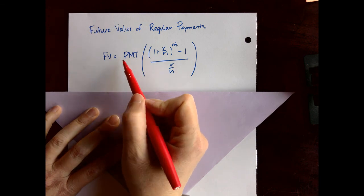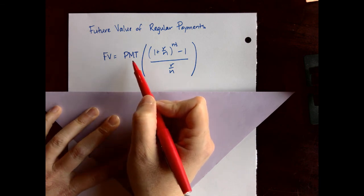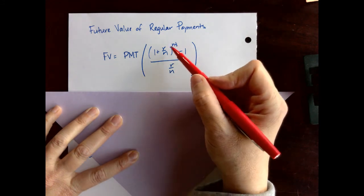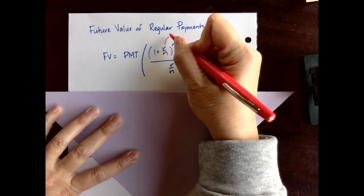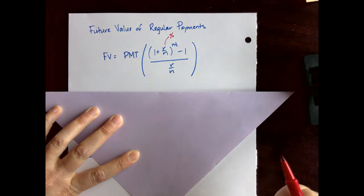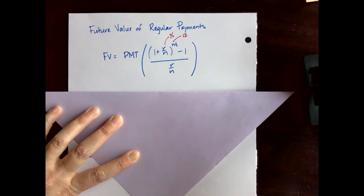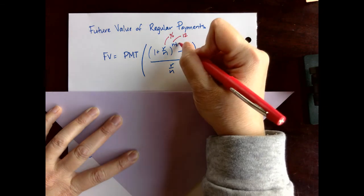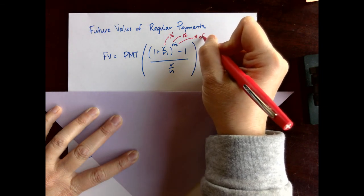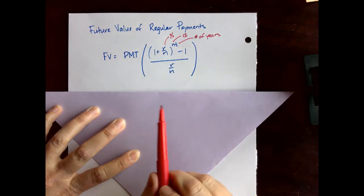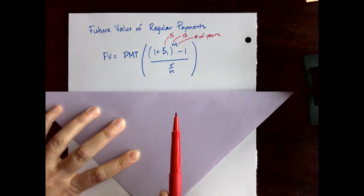Sitting out front here is the regular payment. For us it'll usually be monthly. Inside the formula we have an R value which is our percentage rate but it needs to go in as a decimal. N is for us usually 12 for monthly. T will be the number of years for our scenario.